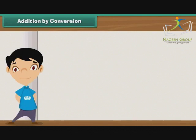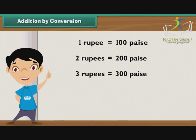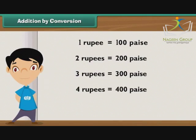Addition by conversion. You are aware that one rupee is equal to 100 paise. It means two rupees are equal to 200 paise, three rupees are equal to 300 paise, four rupees are equal to 400 paise, and five rupees are equal to 500 paise.